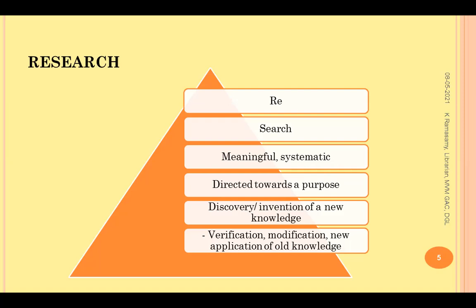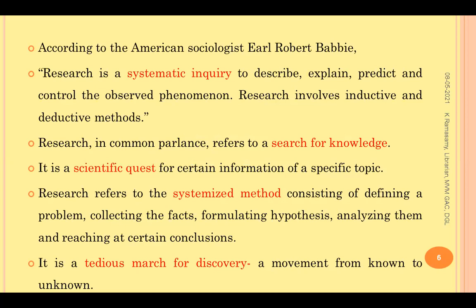In research, you can take existing knowledge and verify whether that law or principle is still applicable today. You may try to bring modifications to already existing knowledge, or you may apply an old theory or principle in a new environment — a new application of old knowledge. All these things fall under the umbrella term called research. In general, research means a search for knowledge — a systematic inquiry.